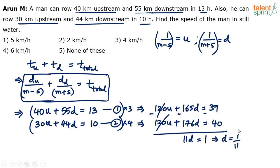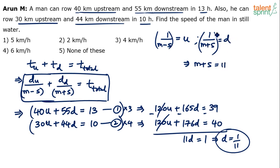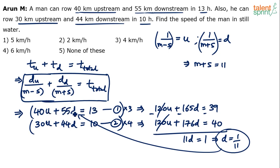So d = 1/11. Since d = 1/(m + s), we conclude m + s = 11. Now substitute d = 1/11 back into equation 1: 40u + 55 × (1/11) = 13, so 40u + 5 = 13, giving 40u = 8, so u = 8/40 = 1/5.